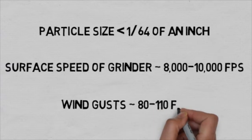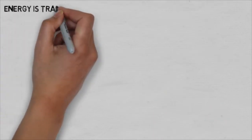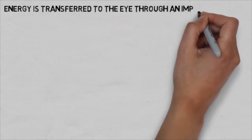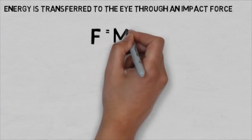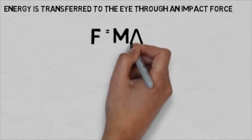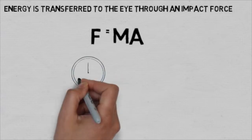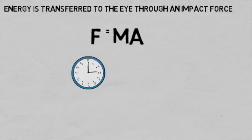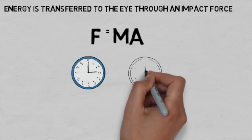Slower, but still very fast. This kinetic energy of the particle is transferred to the eye through an impact force. Force is equal to mass times the acceleration of a particle. Acceleration has units of distance over time squared, meaning it is dependent on both the particle's velocity and the amount of time it takes that velocity to change.